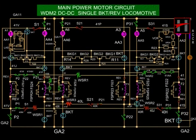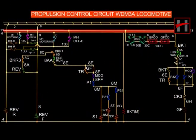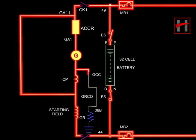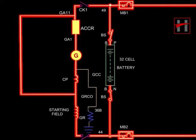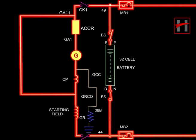We will now discuss the alarm indication circuit in case of earth fault by reference to the power circuit and the propulsion control circuit. The ground or earth fault is sensed by GR connected through the ground relay cutout switch, or GRCO. The GRCO is provided to isolate the ground relay. In the event of earth fault, the following occurs.